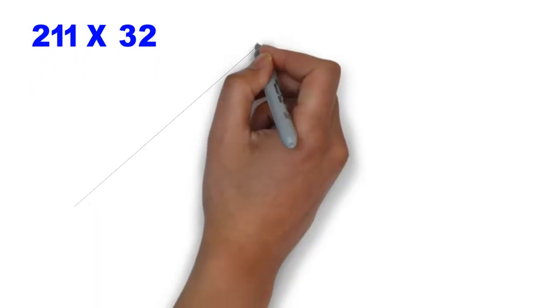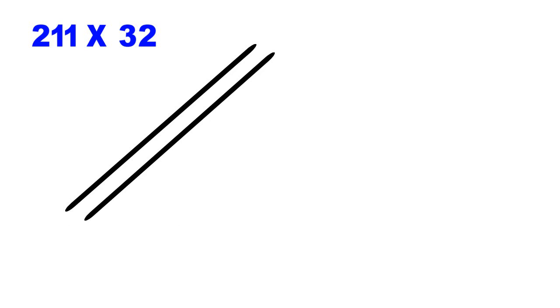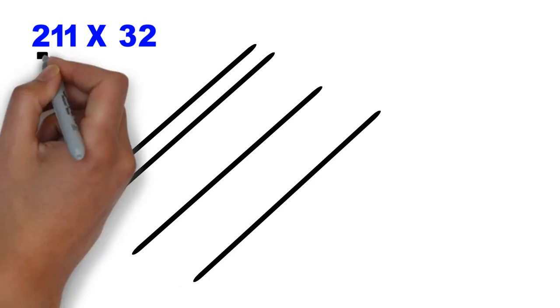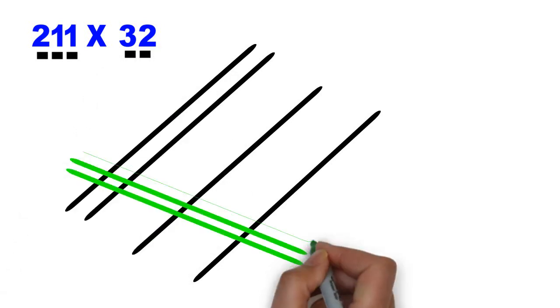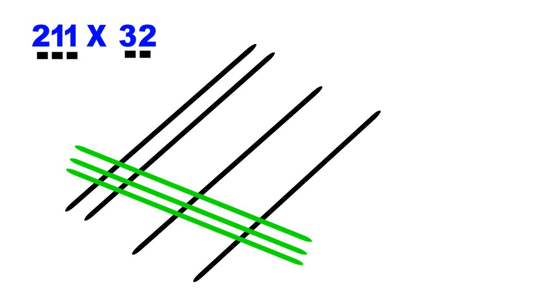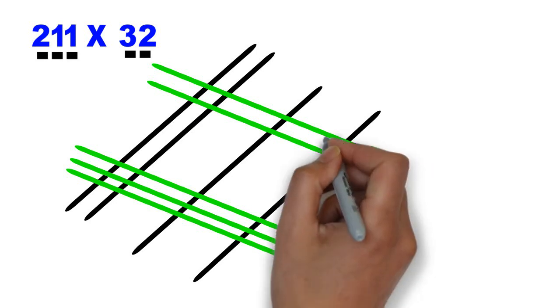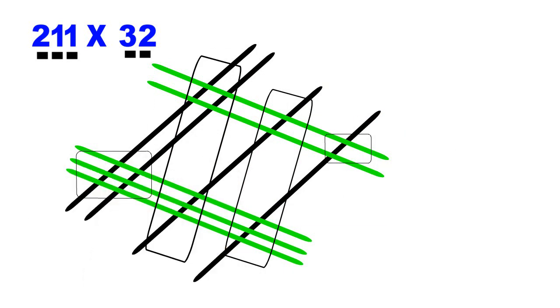2 lines for 2. 1 and 2. 1 line for 1. 1 and another line for 1. This is 2, 1, 1. What about 32? 3 lines for 3. 1, 2 and 3. And 2 lines for 2. 1 and 2. How many vertical zones do you see here? 1, 2, 3 and 4. 4 vertical zones this time. The process remains unchanged.